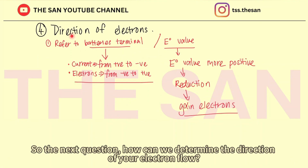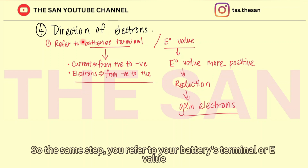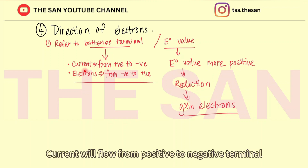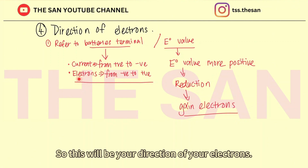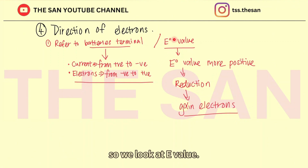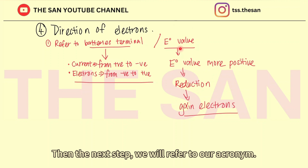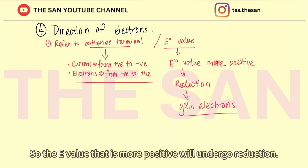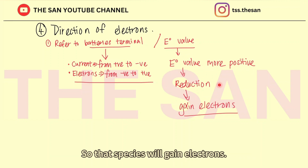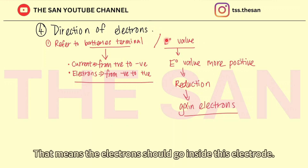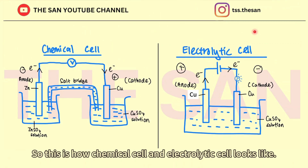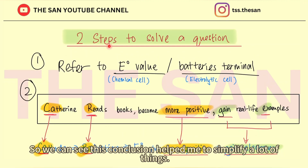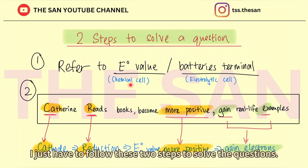How do we determine the direction of electron flow? Same steps — refer to the battery terminal or E0 value. Current flows from positive to negative terminal, and electrons flow from negative to positive terminal. For chemical cells with no battery, we look at the E0 value, then refer to our acronym — the more positive E0 value undergoes reduction, so that species gains electrons, and from there we know the direction of electron flow. This is how chemical cell and electrolytic cell work, and this conclusion helps simplify everything with just two steps.